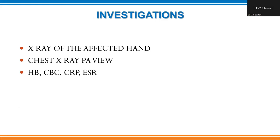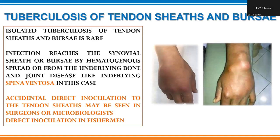Investigations should include X-ray of the affected hand. If there is underlying tuberculosis of the bone — spina ventosa — it will show as a sclerotic lesion in the metacarpal or phalanges, with the whole phalanx ballooned out. A chest X-ray should also be obtained in a suspected case, as later proved here. CBC, CRP, and ESR inflammatory markers may be raised, indicative of active infection. Clinically, the compound palmar ganglion is a swelling crossing the extensor retinaculum at the wrist and extending into the forearm.